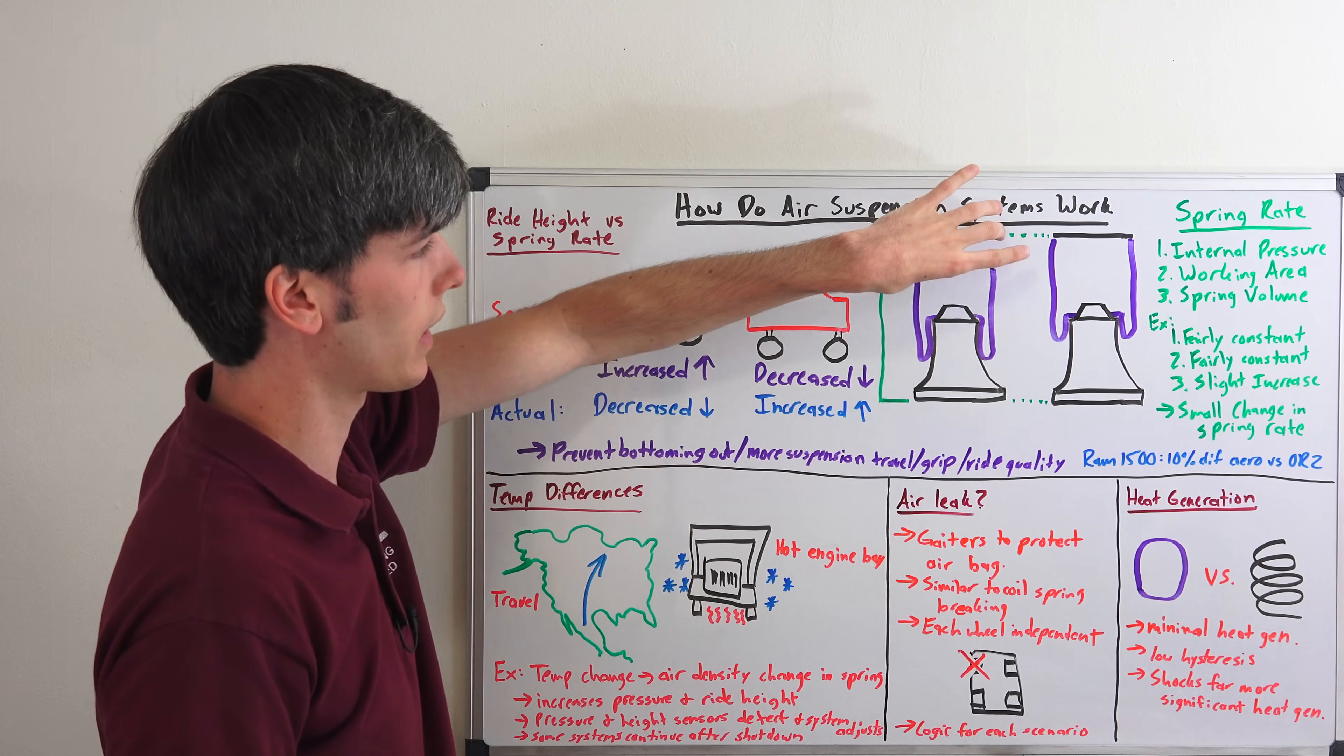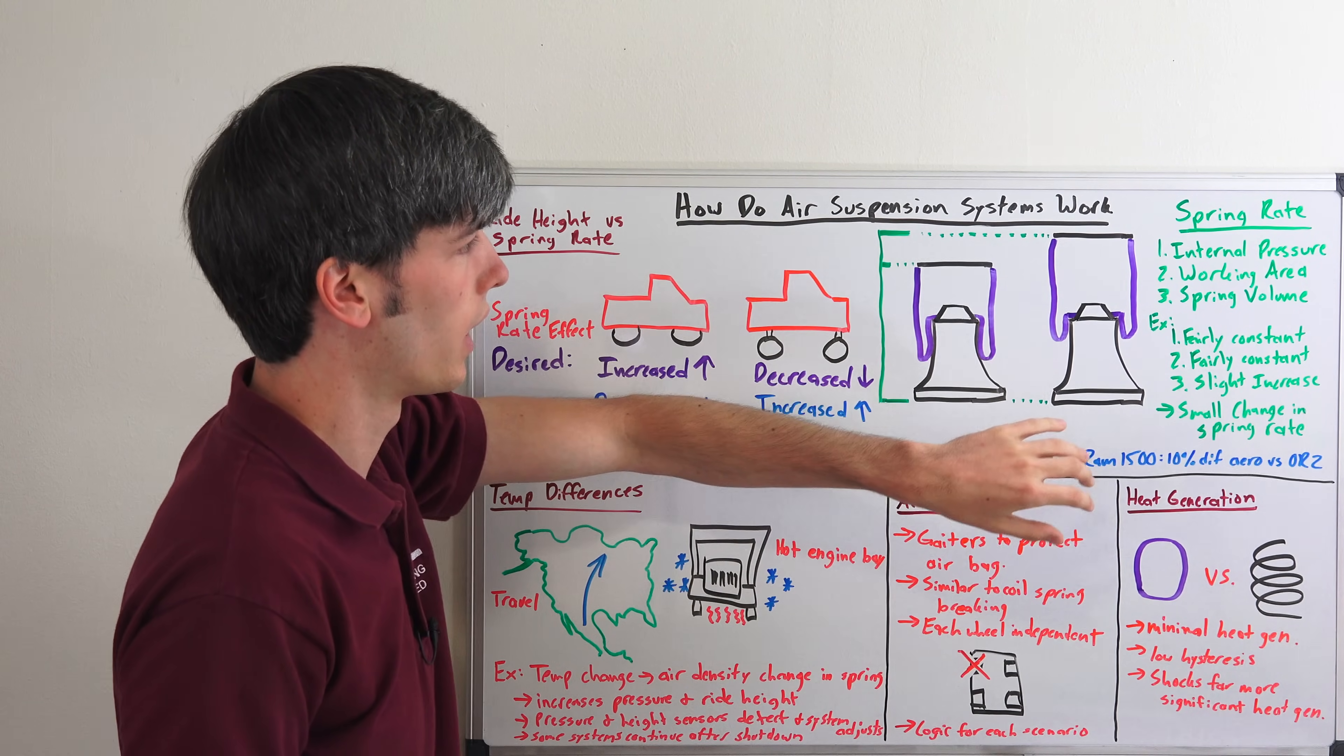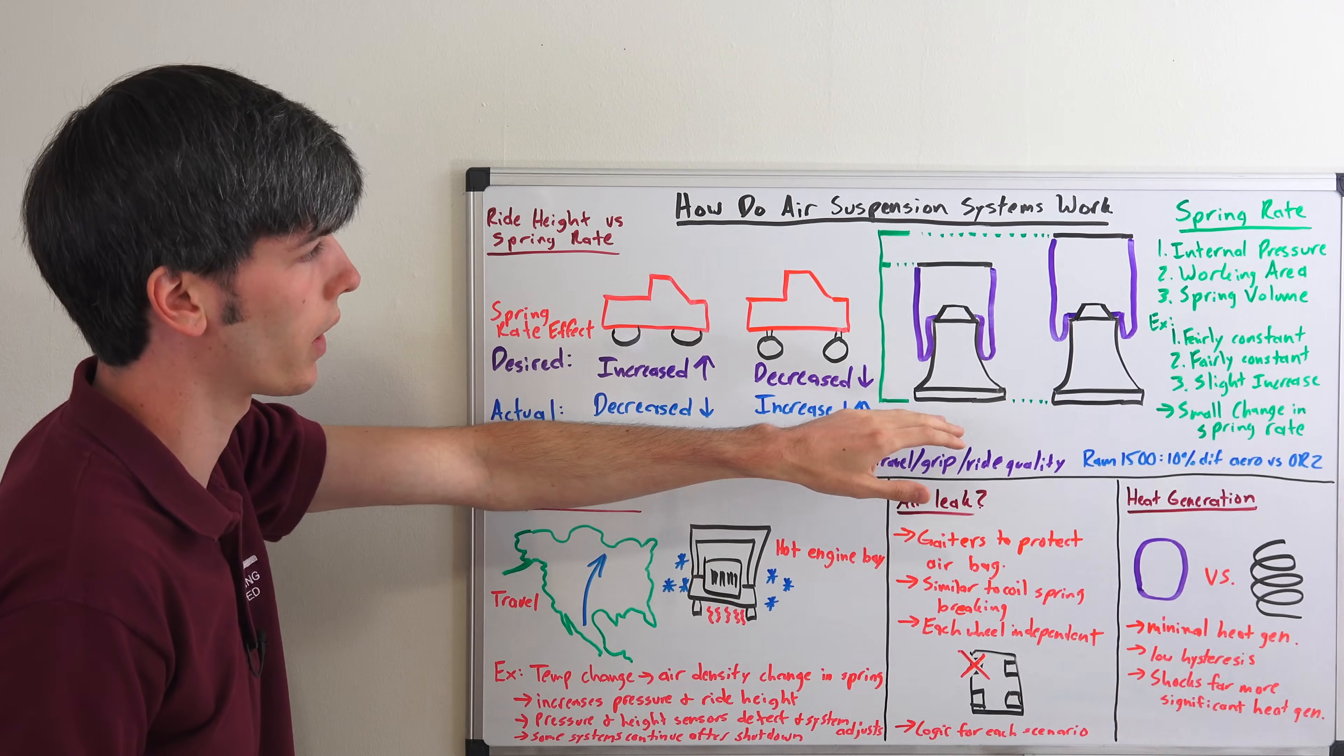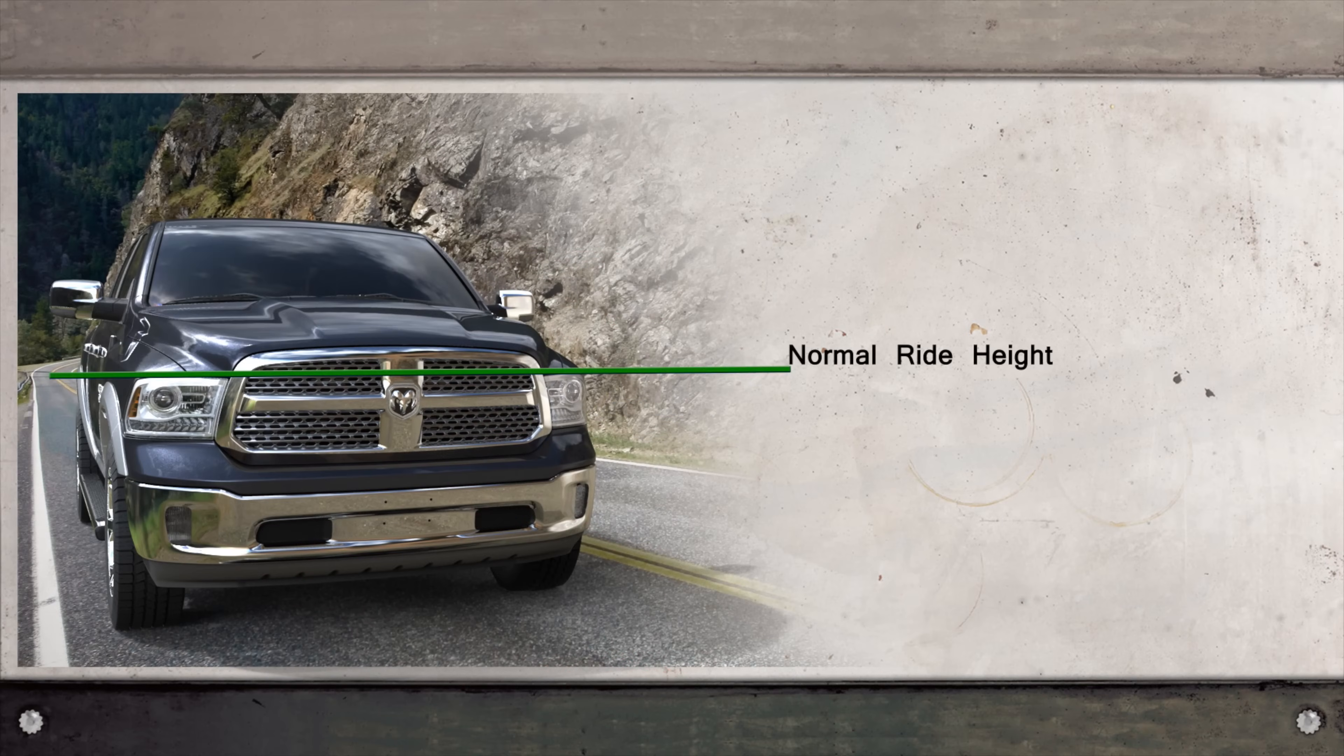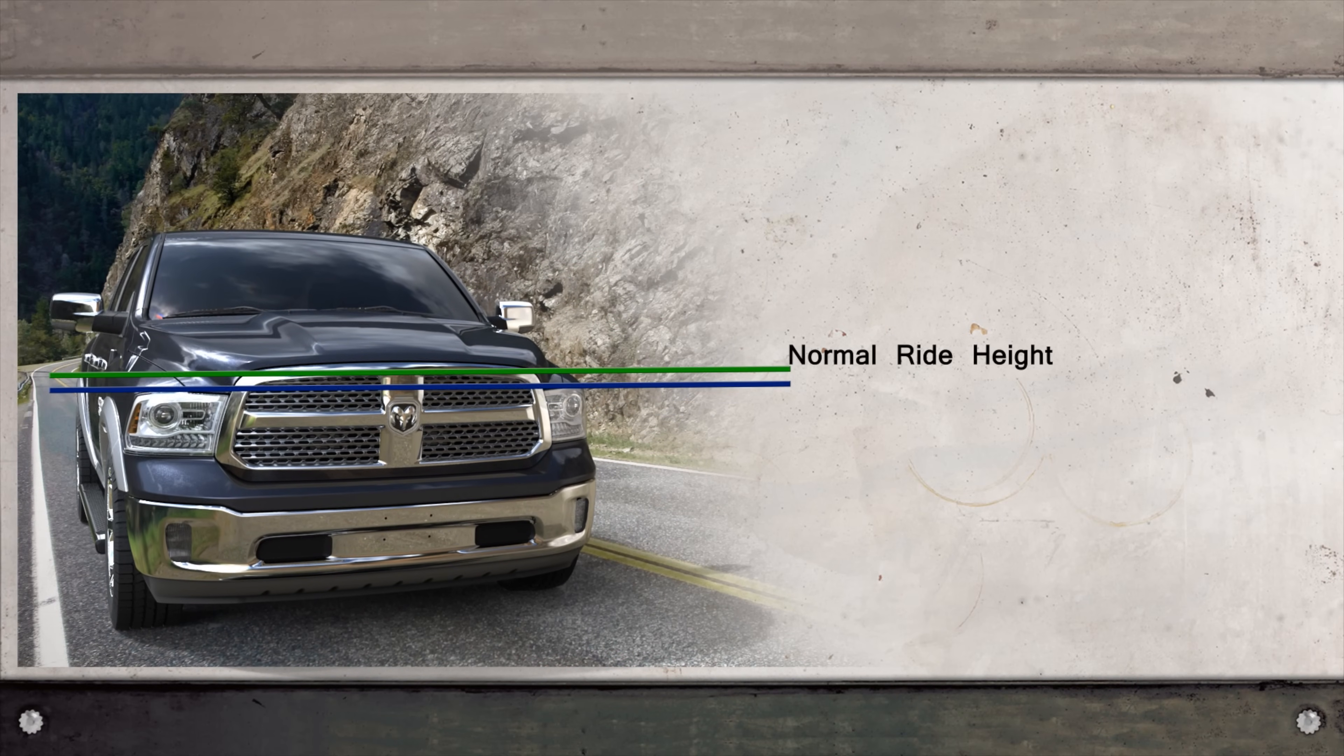So what we've done in this scenario is we have held the internal pressure fairly constant, because what we've done is we've slightly increased the volume within it. So we've had a small volume change, a very slight internal pressure change, and a very slight change in the working area of the spring. Overall this gives you a very small change in the spring rate.